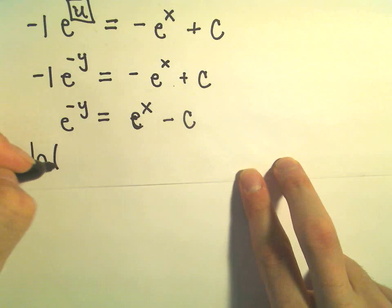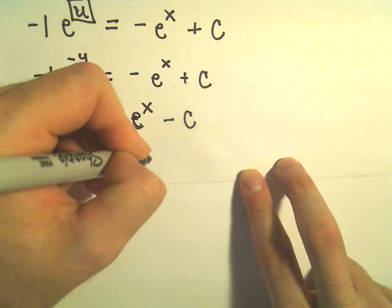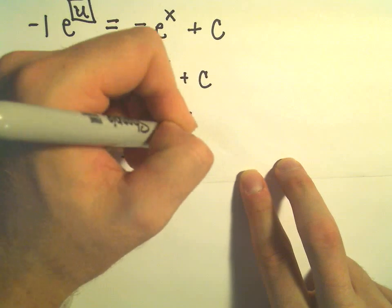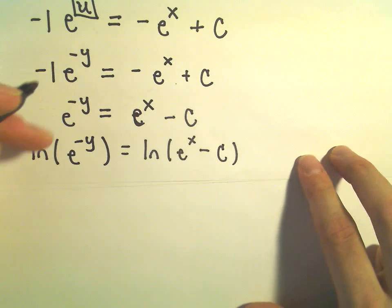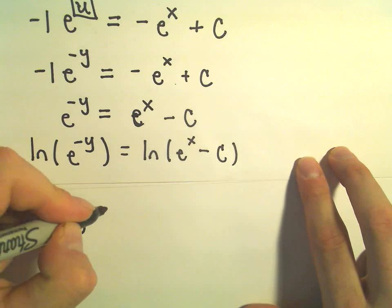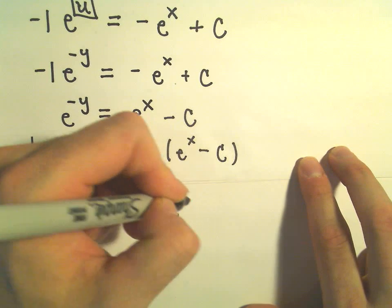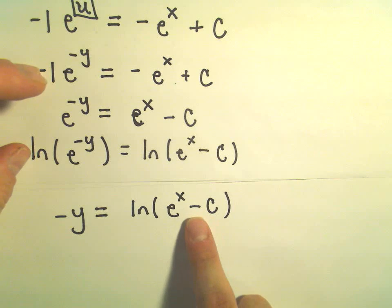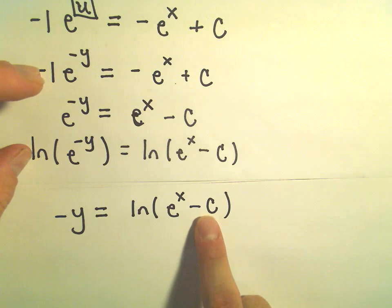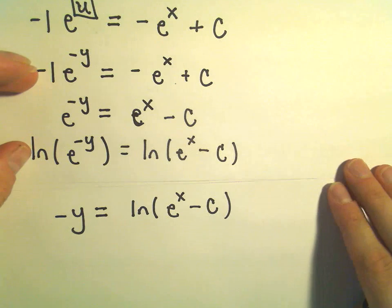So I can take the natural logarithm of both sides. I'll take the natural logarithm of the right side as well. The natural logarithm of e to the negative y is just going to be negative y. On the right side, we have the natural logarithm of e to the x minus c. Be careful, if you have pluses or minuses inside of a logarithm, you can't break that up or simplify it. So we just have to leave the right side alone.